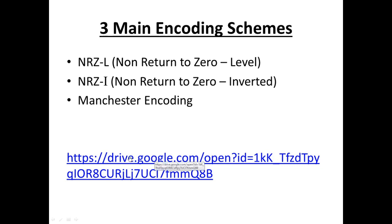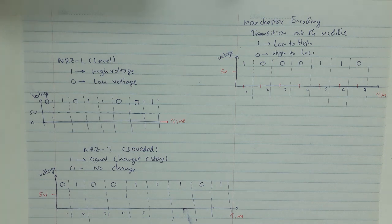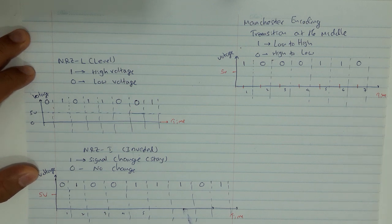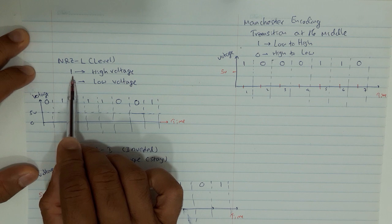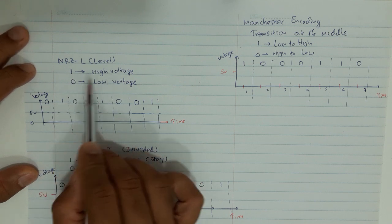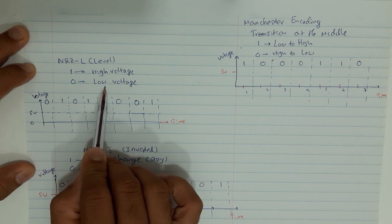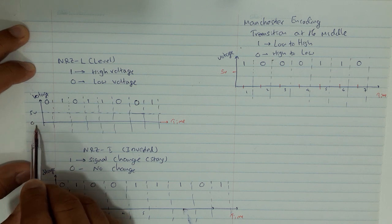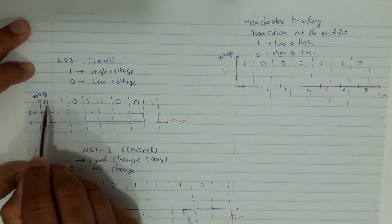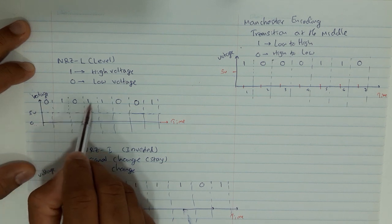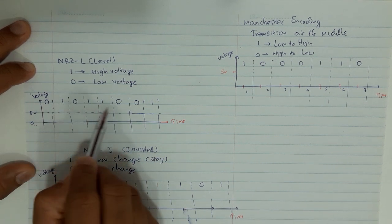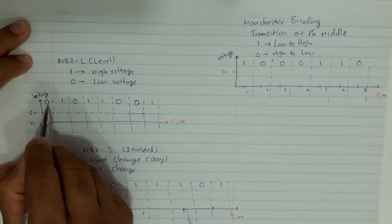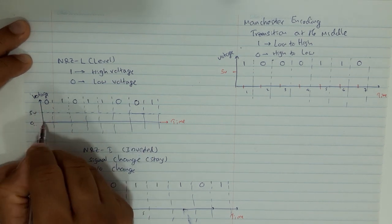First, NRZ-L: Non-Return to Zero Level. The digital value 1 is represented by a higher voltage and the value 0 is represented by a lower voltage. In this case I am considering 5 volts as the higher voltage and 0 volts as the lower voltage. The bits to be represented are 0, 1, 0, 1, 1, 0, 0, and these bits are represented as a signal using 5 volts and 0 volts under NRZ-L.